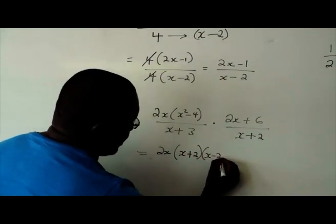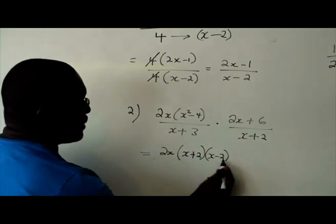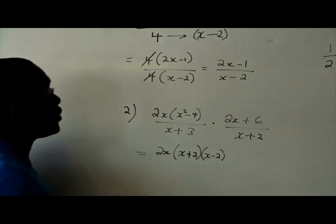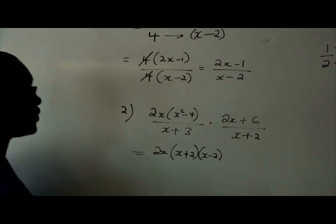x plus 2, x minus 2. So this is representing the x squared minus 4 due to difference of 2 squares.